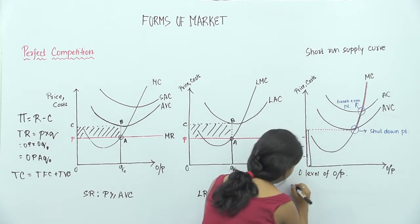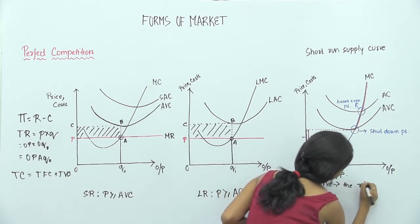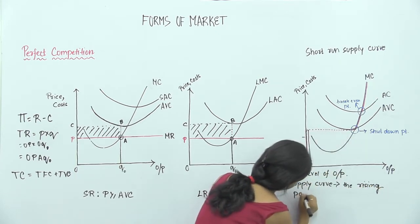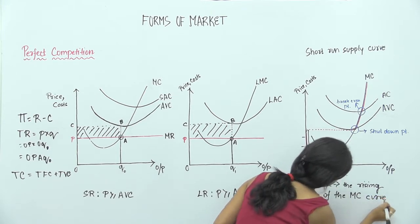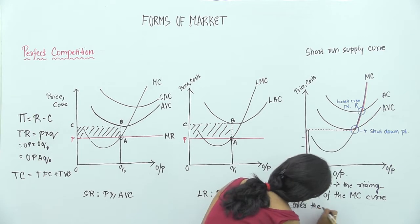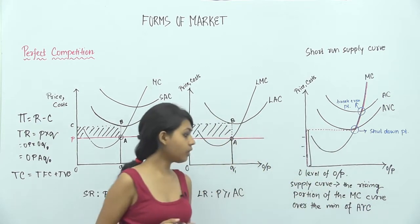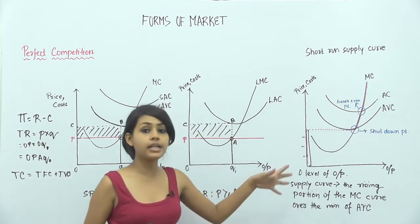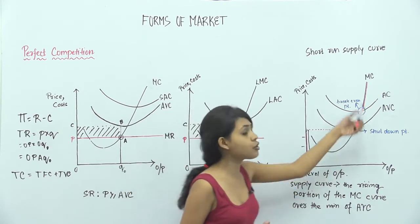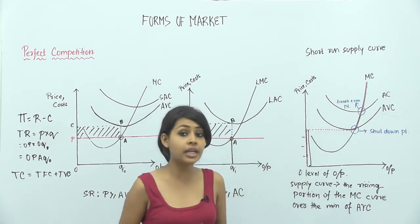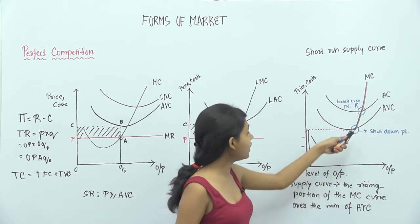So the supply curve is nothing but the rising portion of the MC curve over and above the minimum of AVC. The supply curve is the rising portion of the MC curve because the producer is willing to supply his goods at the marginal cost he incurred for making those goods. That's why the supply curve is nothing but the rising portion of the MC curve over and above the minimum point of AVC.